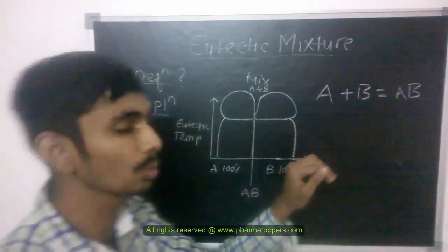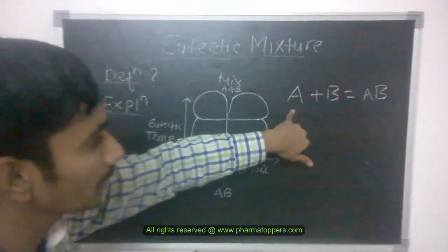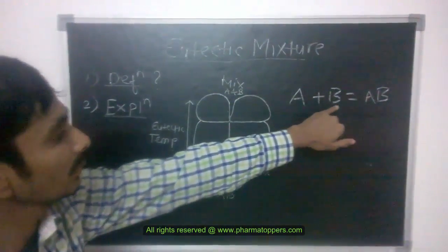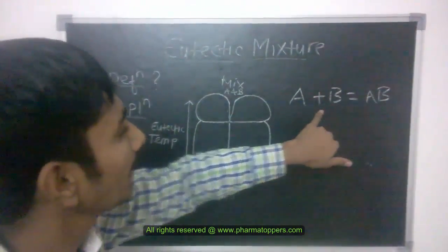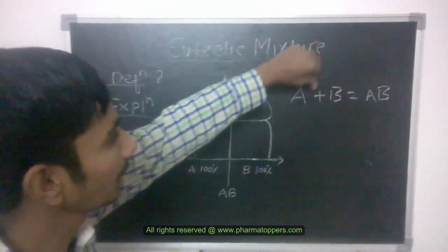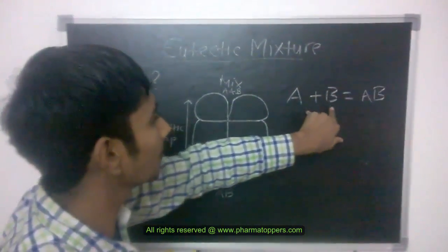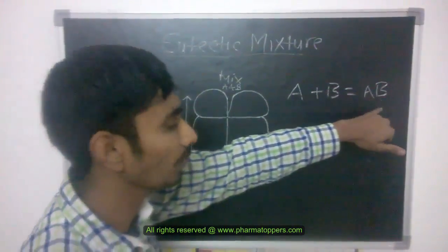For example, we take two different components, component A and component B. Component A has a different melting point and component B has a different melting point. For example, we take component A with melting point 100 and component B with melting point 80. We can mix both A and B to form AB.